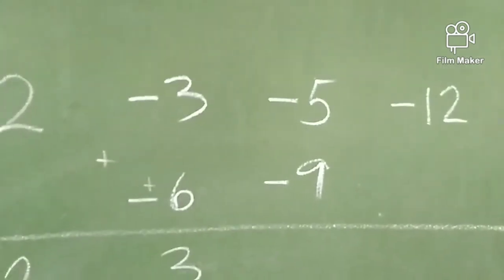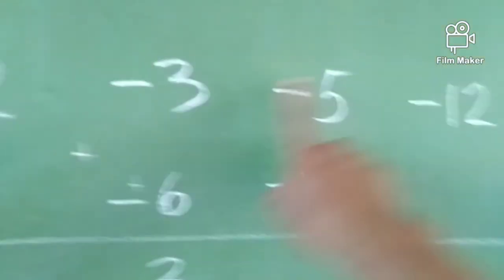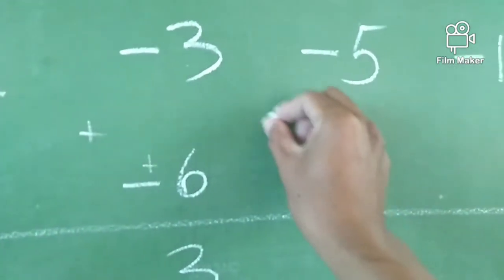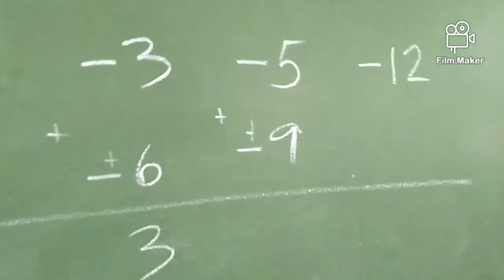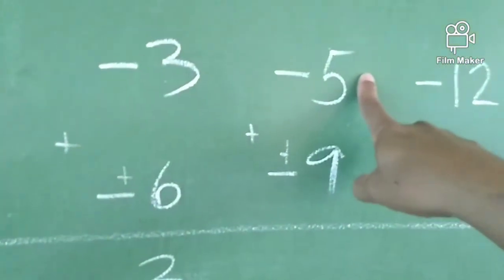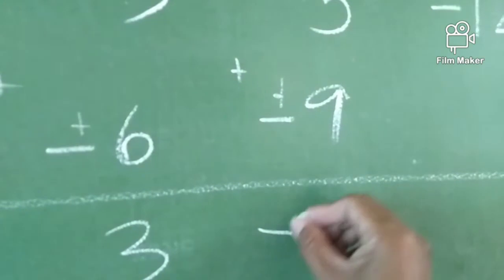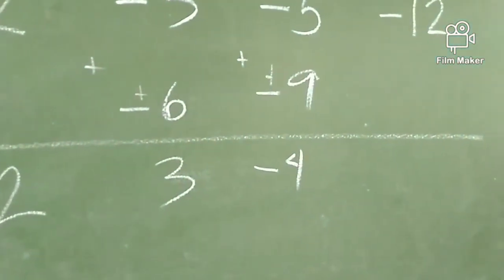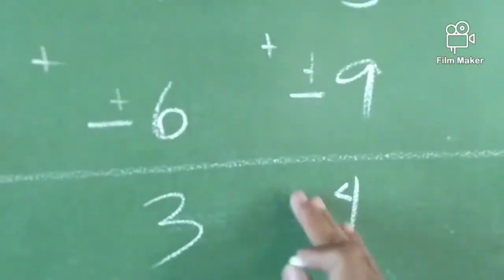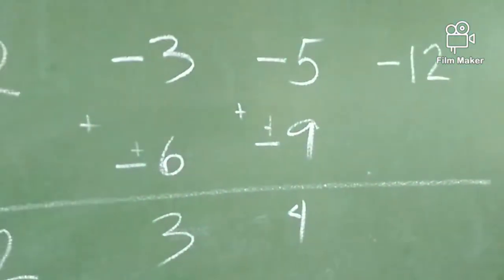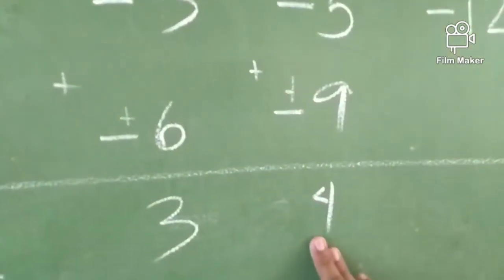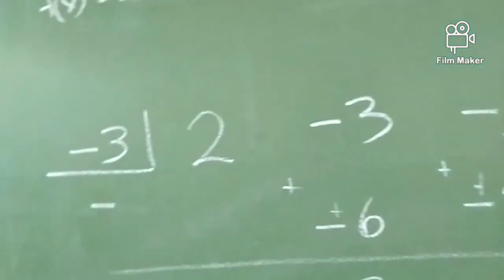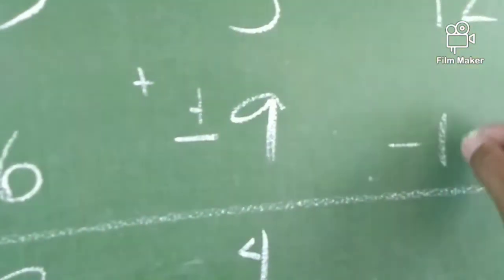Then, subtraction ulit tayo dito. Negative 5 minus negative 9. Change the sign of the subtrahend and proceed to addition. So, we have negative 5 plus positive 9 is equals to positive 4. Next, positive 4 times negative 3. Ilan yung sagot natin? It's negative 12.